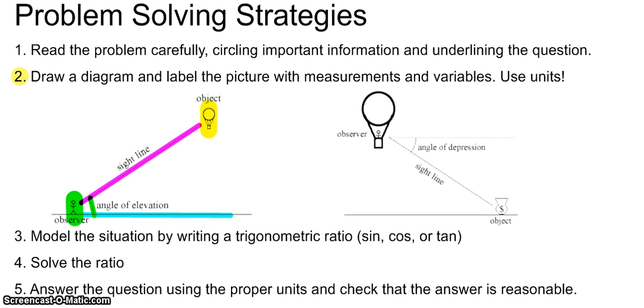So if I told you there was a 30 degree angle of elevation up to the hot air balloon, you would draw a triangle that looks something like this. So with angle of elevation, that angle is always on the ground looking up.